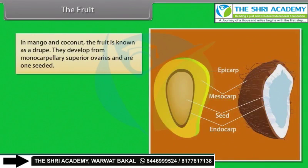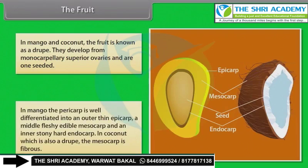In mango and coconut, the fruit is known as a drupe. They develop from monocarpellary superior ovaries and are one-seeded. In mango, the pericarp is well differentiated into an outer thin epicarp, a middle fleshy edible mesocarp, and an inner stony hard endocarp. In coconut, which is also a drupe, the mesocarp is fibrous.